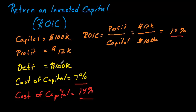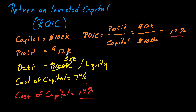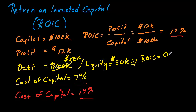Let's take this one step further to make it look more like an airline. Usually airlines get their capital from two places: debt and equity — they sell shares in the company. Let's say they got fifty thousand dollars from debt and fifty thousand dollars from equity. We can now expand the ROIC definition: ROIC is operating profit divided by capital, where capital is the sum of debt plus equity.